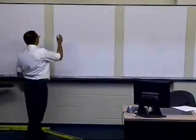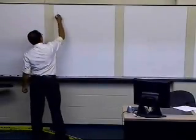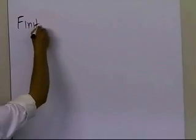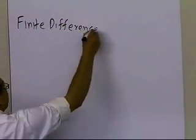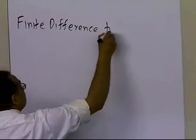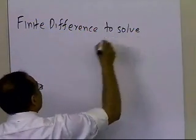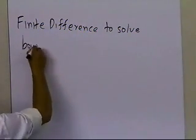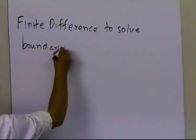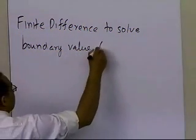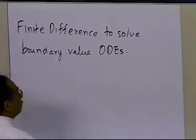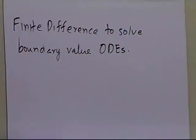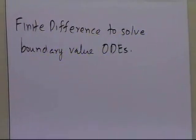In this segment, we're going to look at finite difference methods to solve boundary value ODEs. The finite difference method is one of the methods used to solve boundary value ordinary differential equations. There's another method called the shooting method, which is covered in a separate segment.